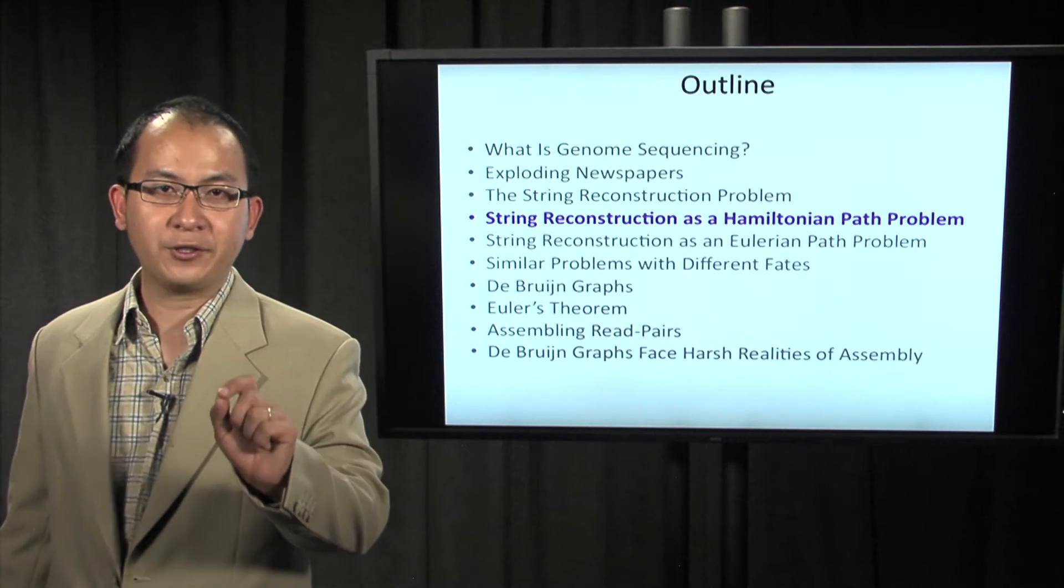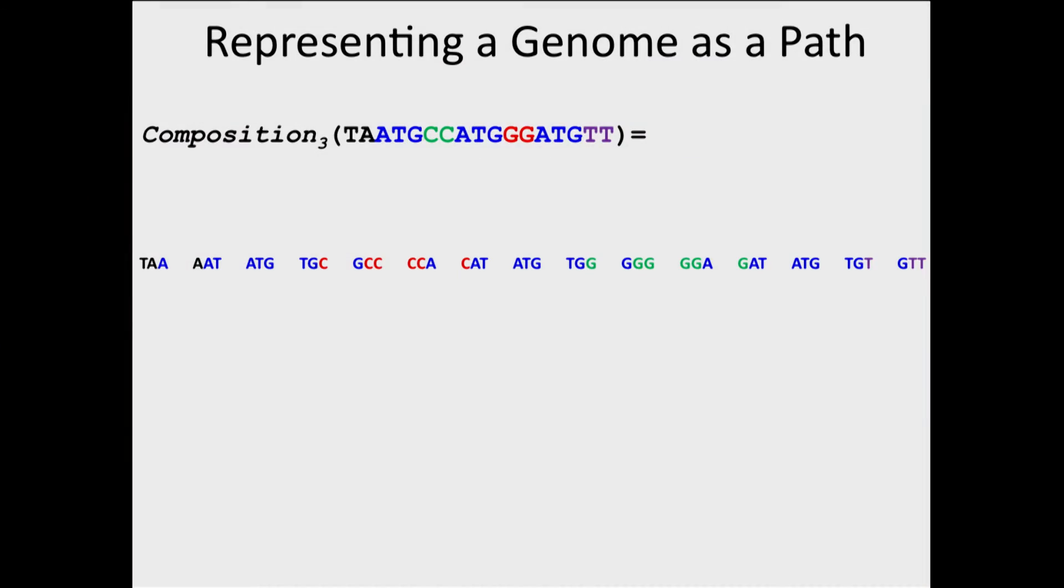Let's now design the algorithm for solving the genome assembly problem. We have a string and its three-mer composition, which is a set of all three-mers generated from the string.